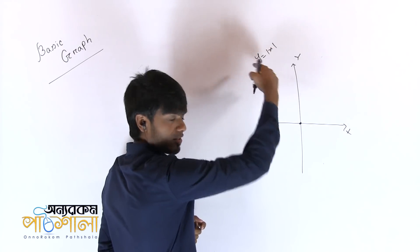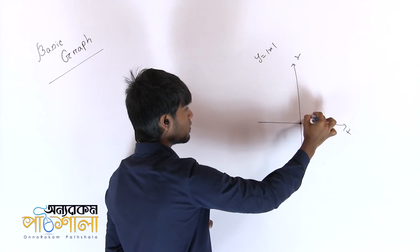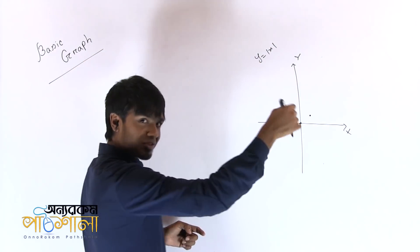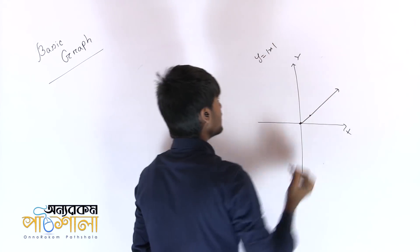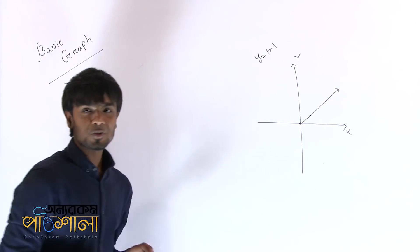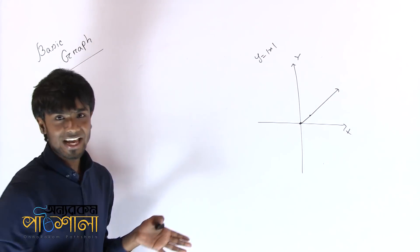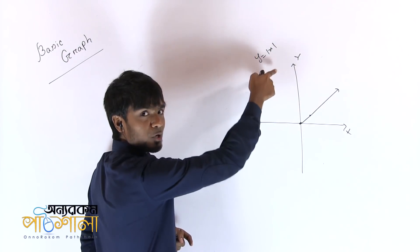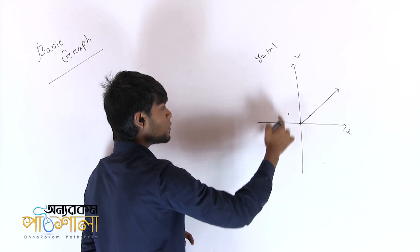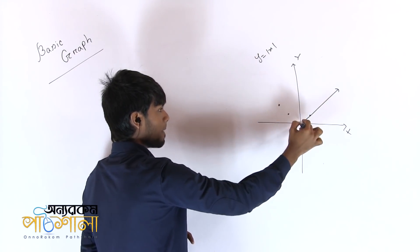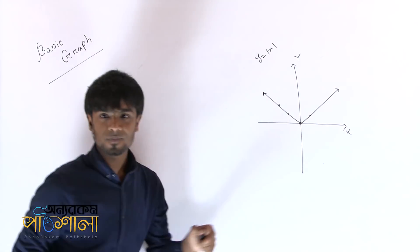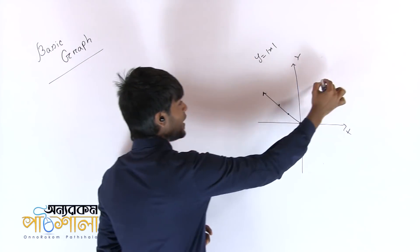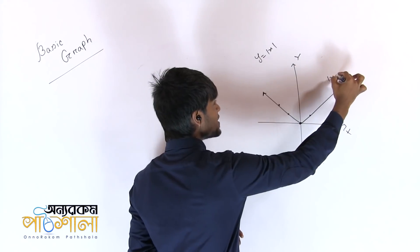For 0 input we get 0, for 1 input we get 1, for 2 input we get 2. For minus input, plus minus 1 input gives plus 1, and minus 2 gives the corresponding output. Concept is clear? So this is our modulus x graph.